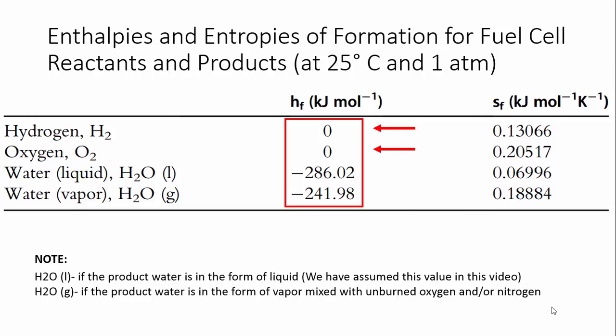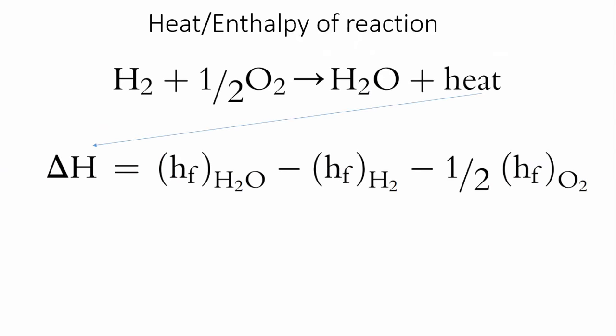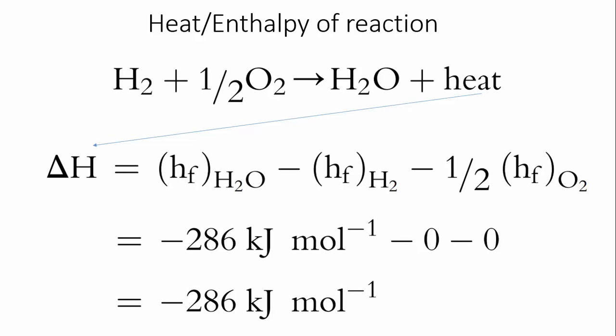Now substitute the enthalpy values in our previous equation. We get 286 kilojoules per mole of hydrogen as heat. This is the hydrogen's heating value.